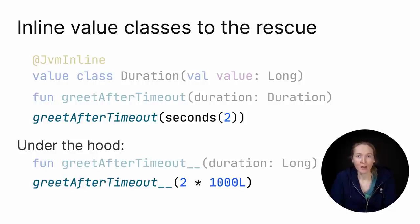In the next example, we use the nice seconds function, which returns the Duration value, and the compiler also replaces it with a corresponding constant under the hood.